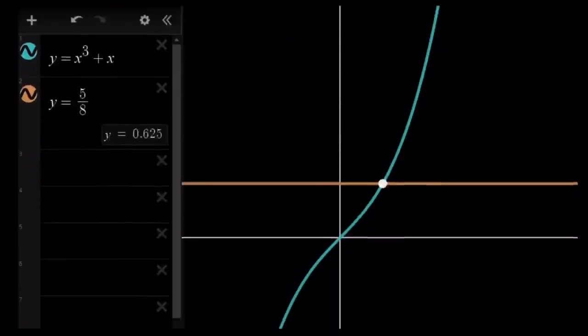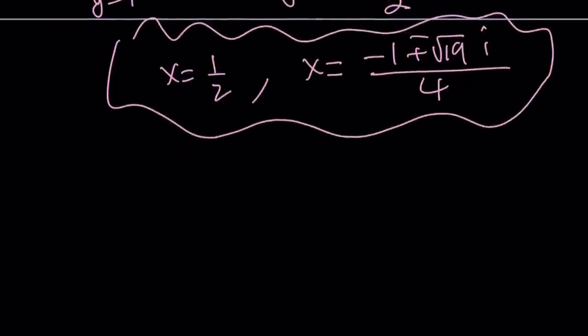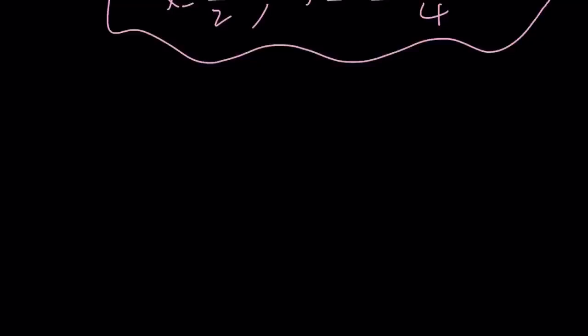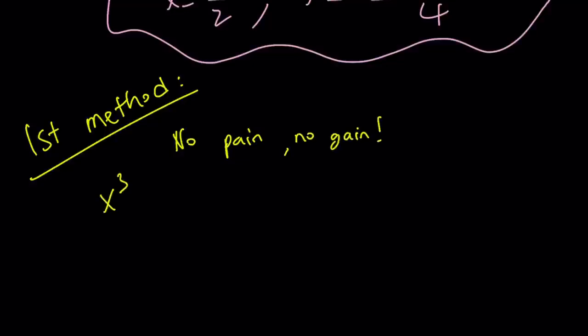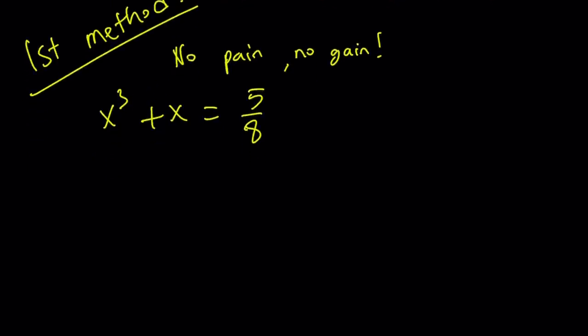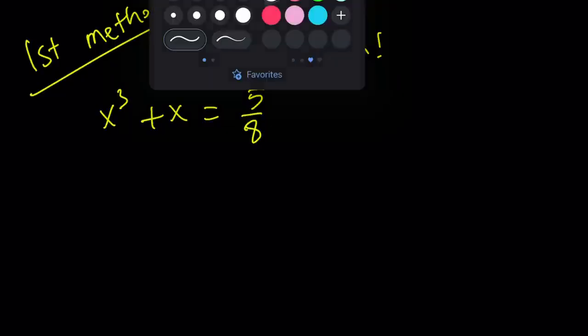So that was the second method. Let's talk about the first method. My first method, by the way, is called no pain, no gain. Here's what we're going to do. Let's rewrite the equation. This is our cubic in a nice form. Now, remember the cubic formula. Where does that formula come from?